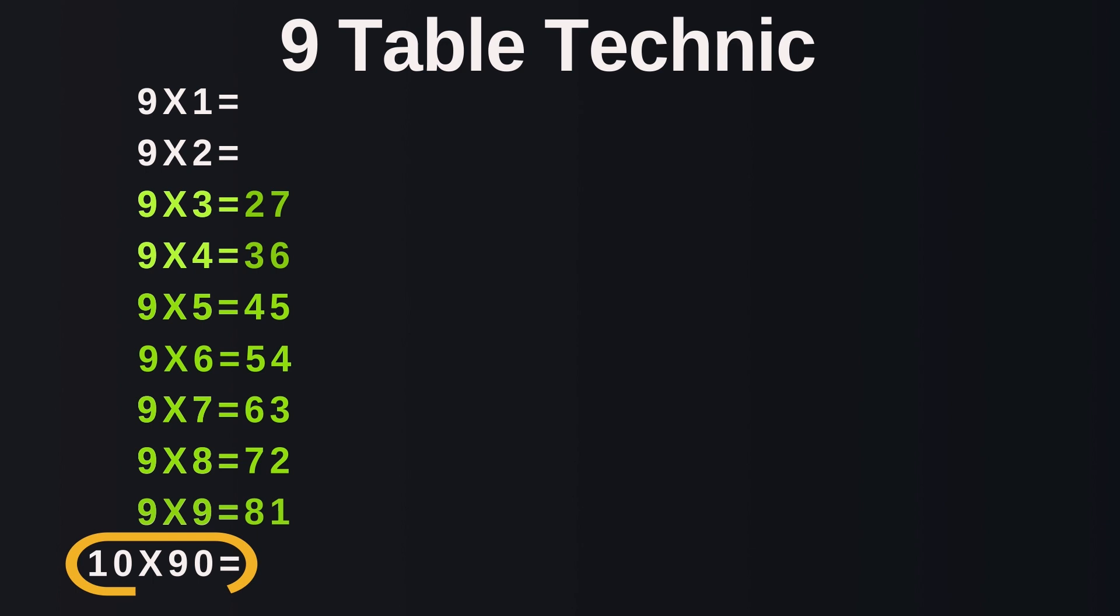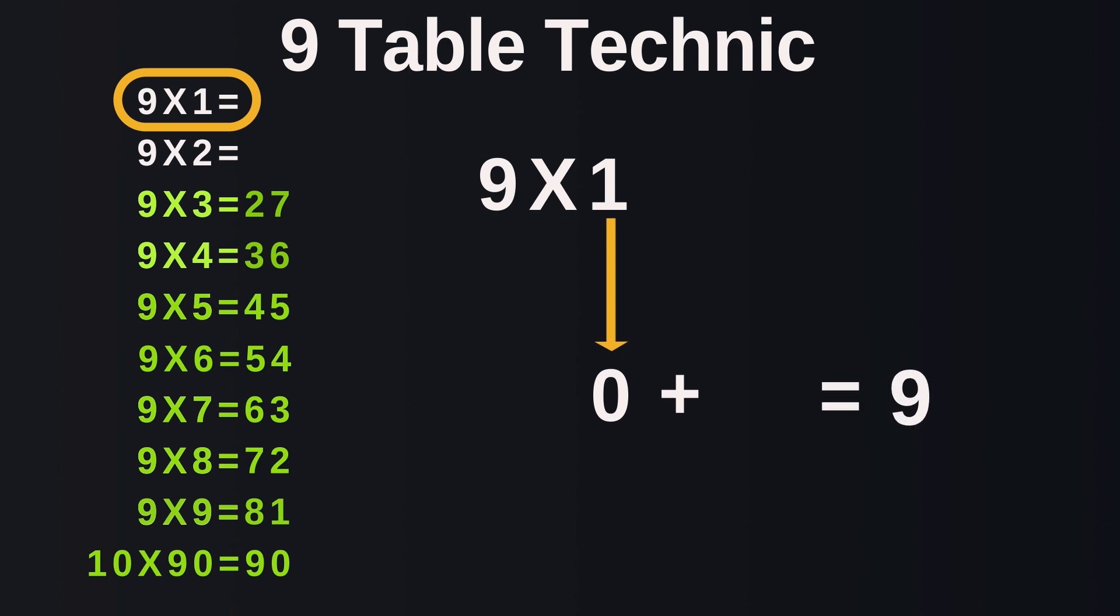Let's try 10 times 9. The digit directly below 10 is 9, and the digit to add to 9 to give us a result of 9 is essentially 0. So our answer to 10 times 9 is 90. Now let's go back to the equations we didn't complete. 9 times 1: the digit directly below 1 is essentially 0, and the digit to add to 0 that will give us 9 is 9. So our answer will be 09, and we all know that when a 0 is in front of a digit we don't need to count it, so our answer will be just 9.